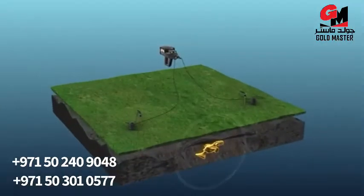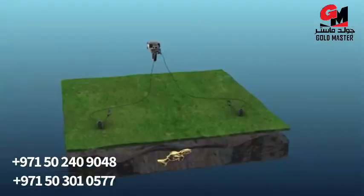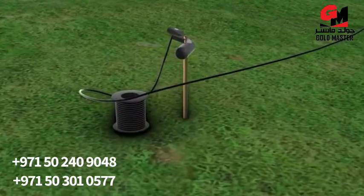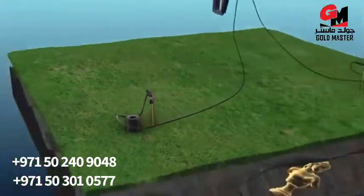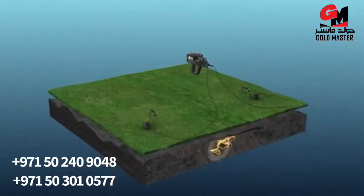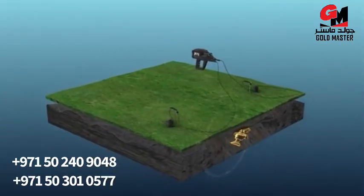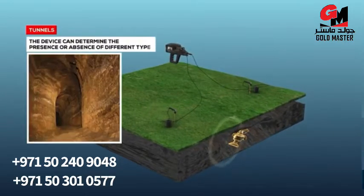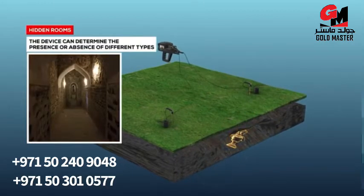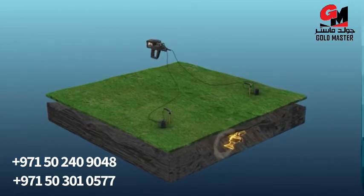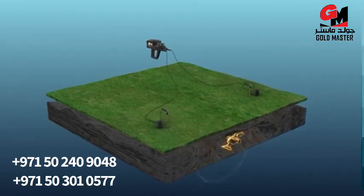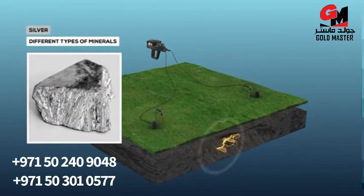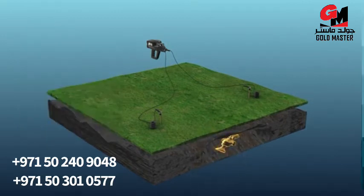The high-performance geophysical system uses geo-electrical measurement to measure how much the soil resists or conducts electric current, known as ground resistivity. Wedges are planted in the ground in the search area, and based on the soil's resistivity values, the device can detect the presence or absence of caves, cavities, tunnels, or hidden rooms. By pre-selecting in the system settings, the geophysical system will differentiate between metals such as gold, silver, and copper, and even groundwater deposits.